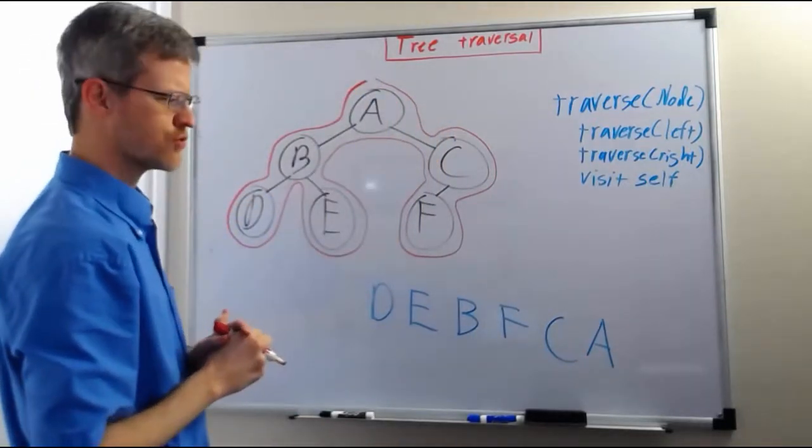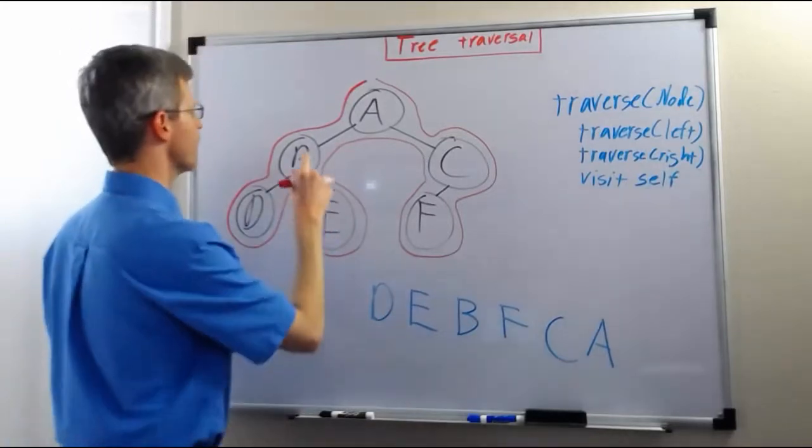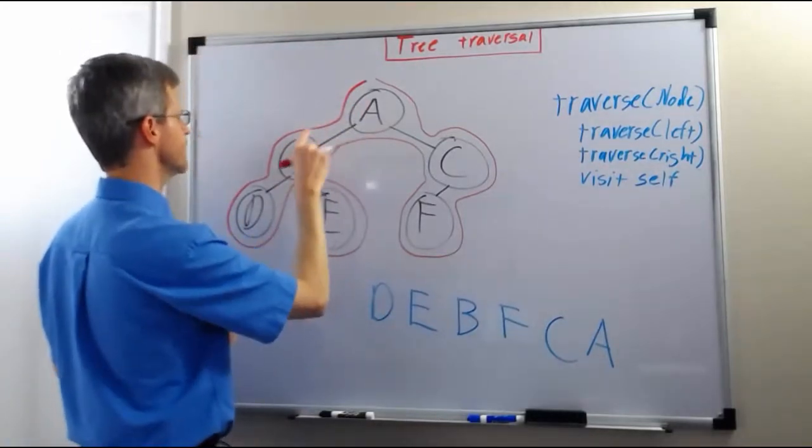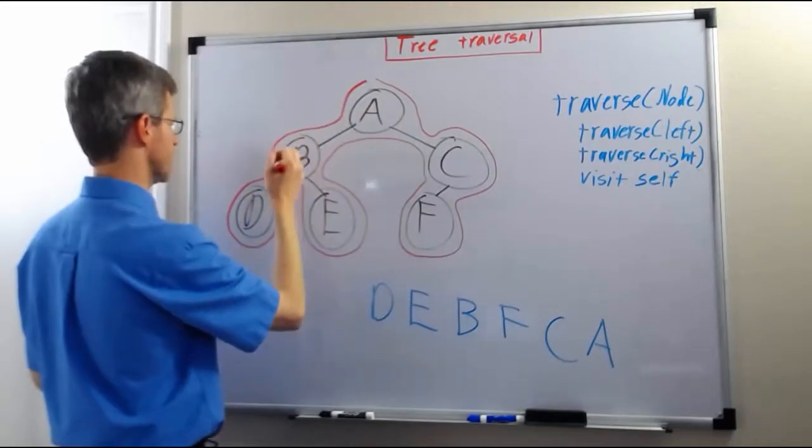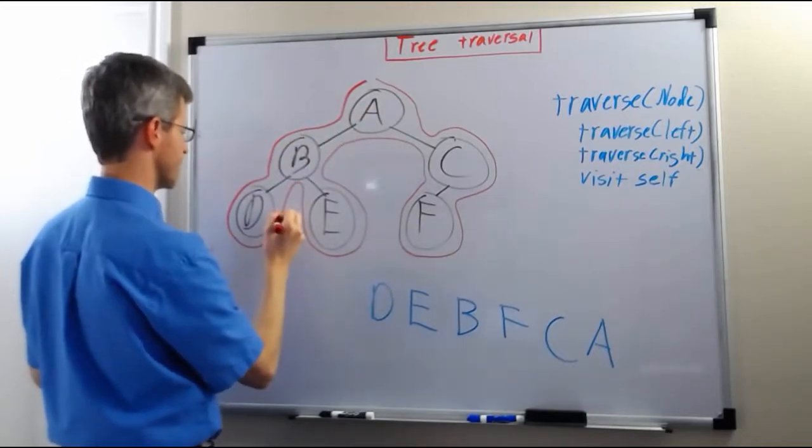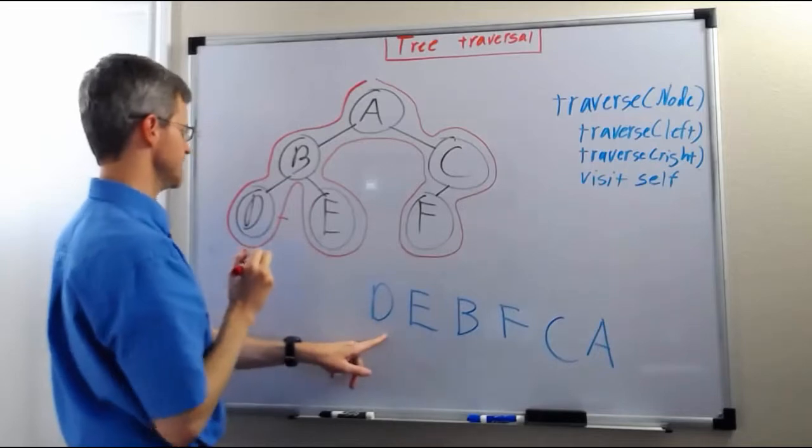And then to do a post-order traversal, we visit a node when we go to the right of it. So A, B, so go to the left, go to the left, go to the left, go beneath, okay, so we go to the right of D, so we output D.